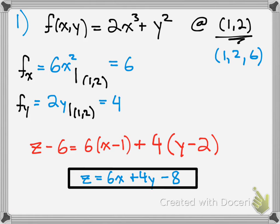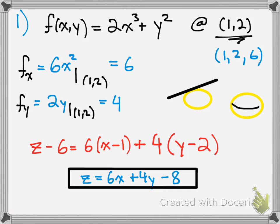A tangent plane: here's a circle with a tangent line at a point — that's two-dimensional. Now if you have a sphere, instead of a tangent line you get a tangent plane. That's the difference. Okay, next problem.